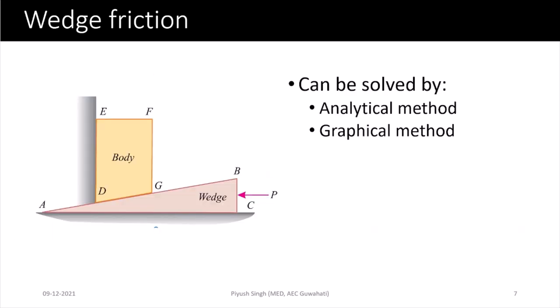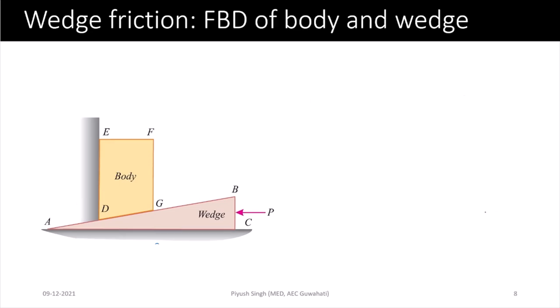Problems related to wedge friction can be solved using an analytical method as well as a graphical method. In the last class, we discussed the analytical method. Today, we will concentrate on the graphical method. We will analyze the body and the wedge separately and draw the free body diagram for each.